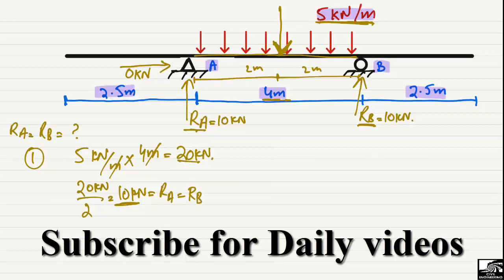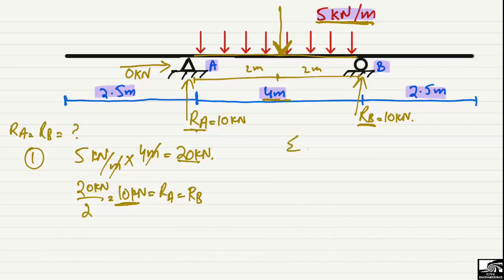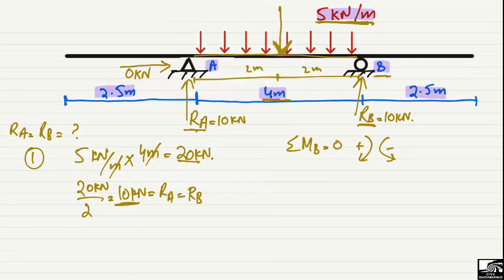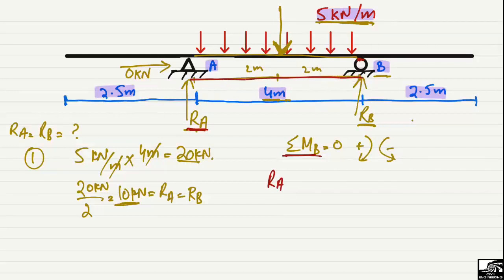The second method uses equilibrium equations. Take summation of moments at point B equal to zero. Clockwise moment is taken as positive and anti-clockwise as negative. Ra creates a moment about point B: Ra multiplied by its distance to point B, which is 4 meters. This acts clockwise (upward force), so it is positive.